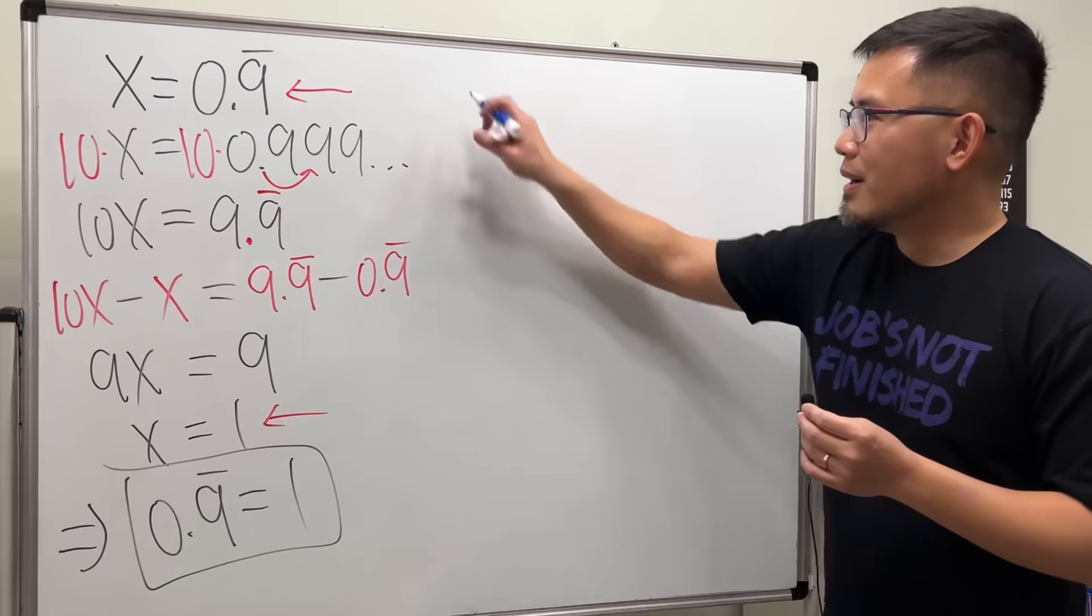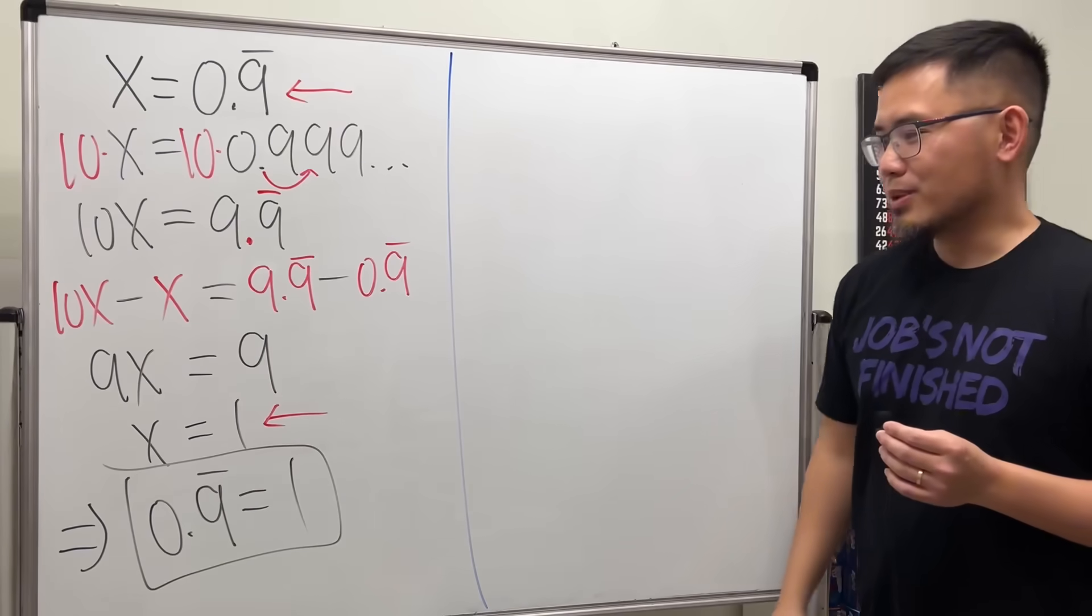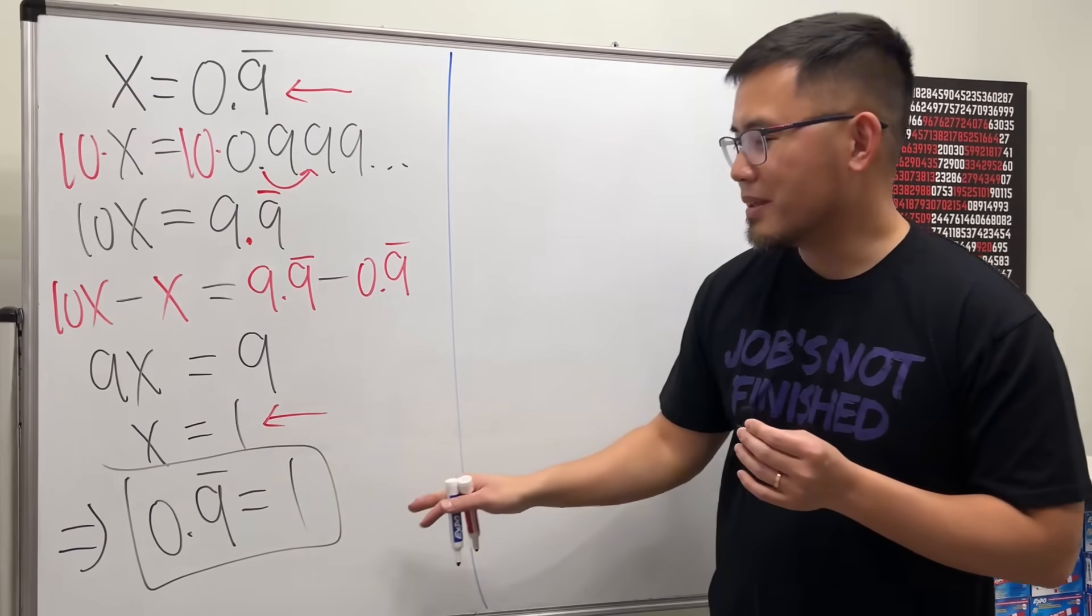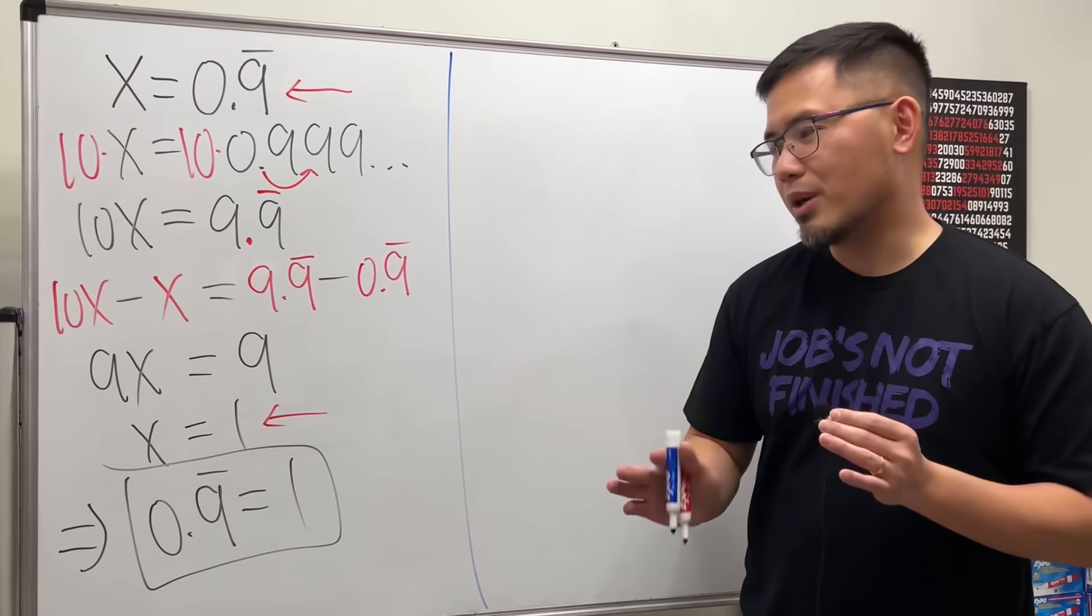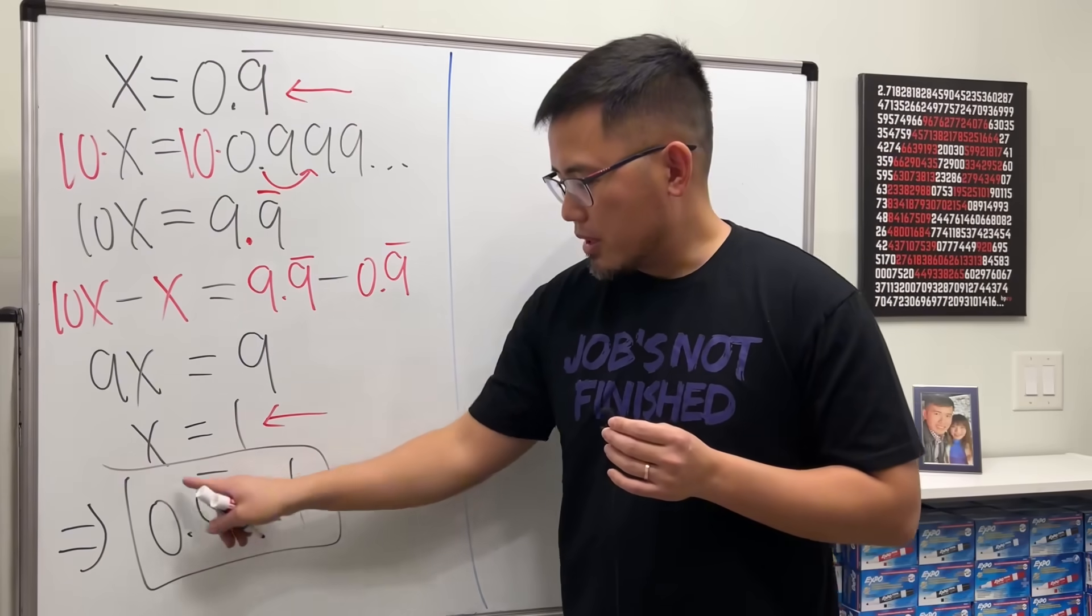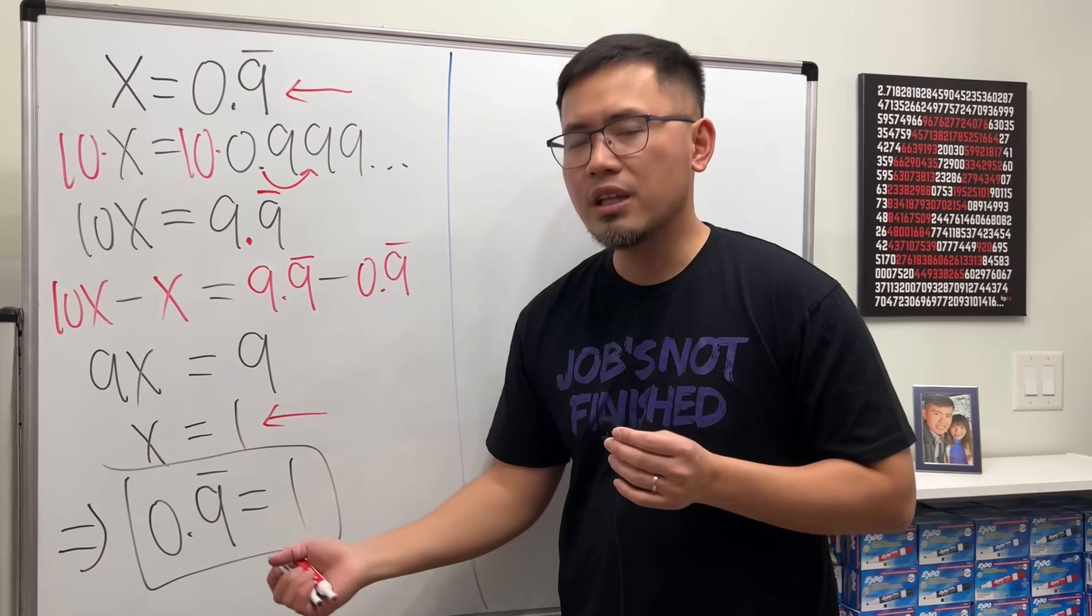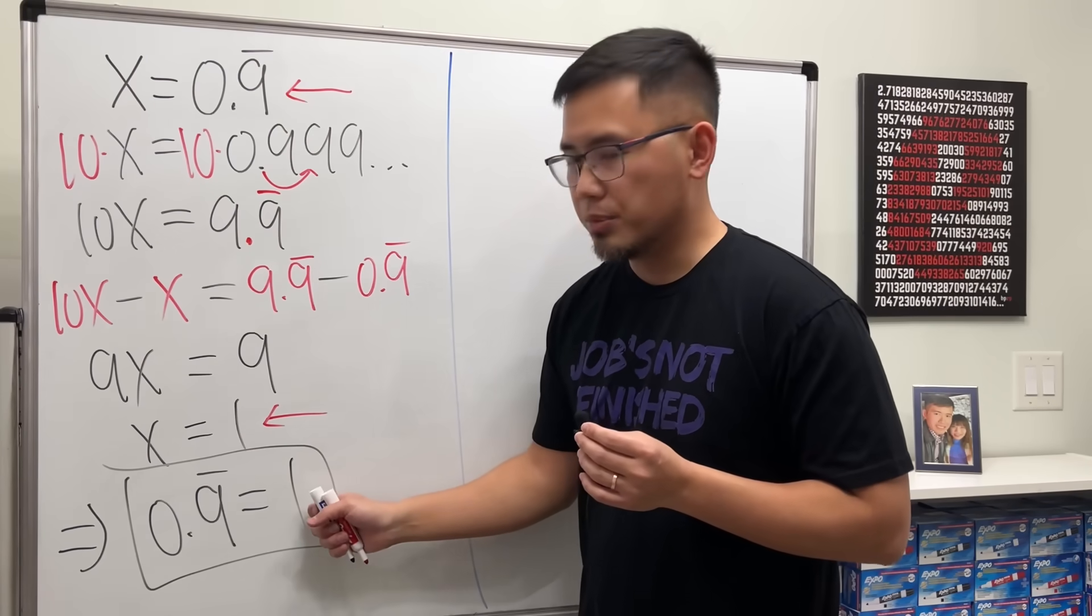Here is what I'm going to do. I think it's just because the 0.9 repeating is equal to 1 is a little bit shocking, but let me just tell you. This right here, it's a repeating decimal number. You can change that to a fraction, and that fraction just happens to be 1.